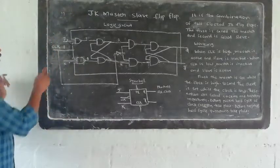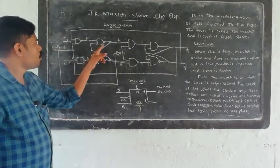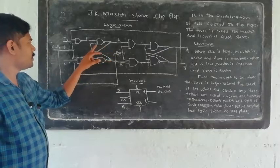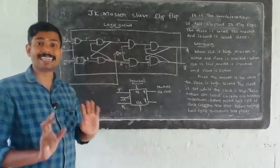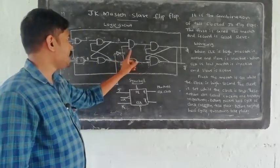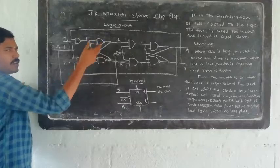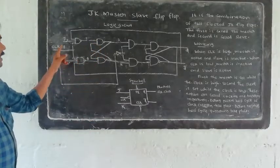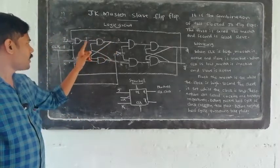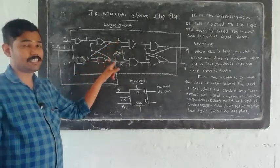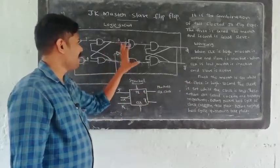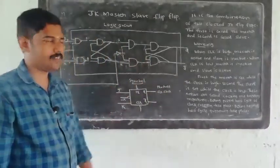When the clock is high, the outputs of the master will be changed — S and R will be changed. The master is said to be set. But the slave becomes inactive. When clock is high, master is active and said to be in set condition, but the slave is inactive and not set.